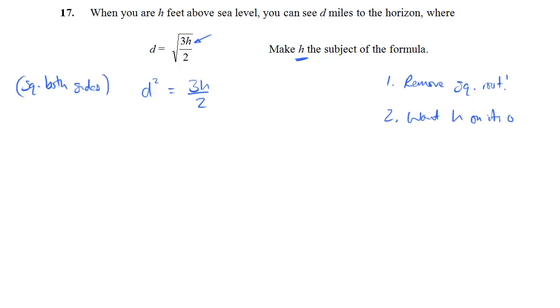And now I just want H on its own. So I want to get rid of the 2 and the 3, which I can do one at a time. Divided by 2, well, the opposite is multiplied by 2. So times both sides by 2, I get 2D squared is equal to 3H.